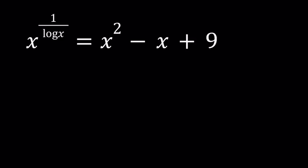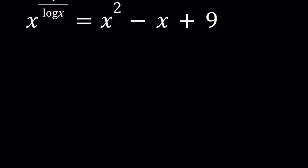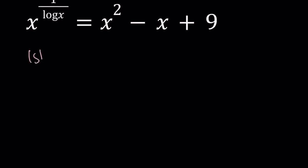So we have x to the power 1 over log x equals x squared minus x plus 9. This is fairly interesting because, first of all, I believe this is a homemade problem. Second, we have a polynomial on the right-hand side which is actually a parabola, and on the left-hand side we have something interesting. I know some of you have said we've seen this before, so I'm going to introduce two methods.